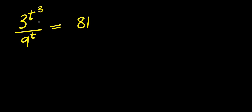Hello. How to solve this exponential problem: 3 to the power t³ divided by 9 to the power t equals 81, solving for all values of t that satisfy this equation. Let's make sure all the bases are the same — the base here is 3, here is 9, here is 81.